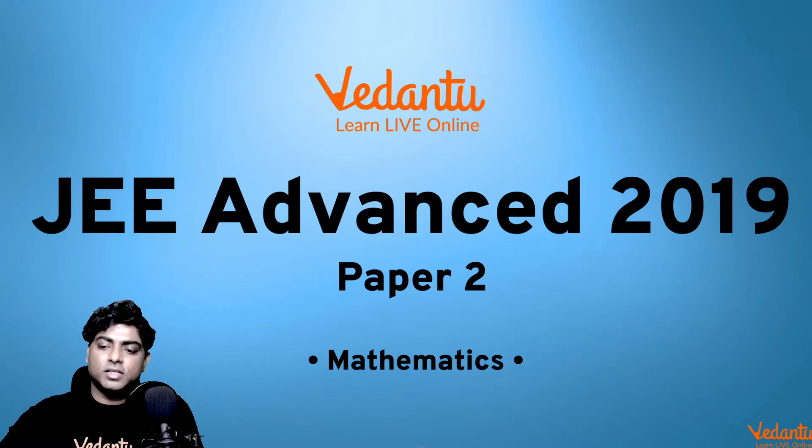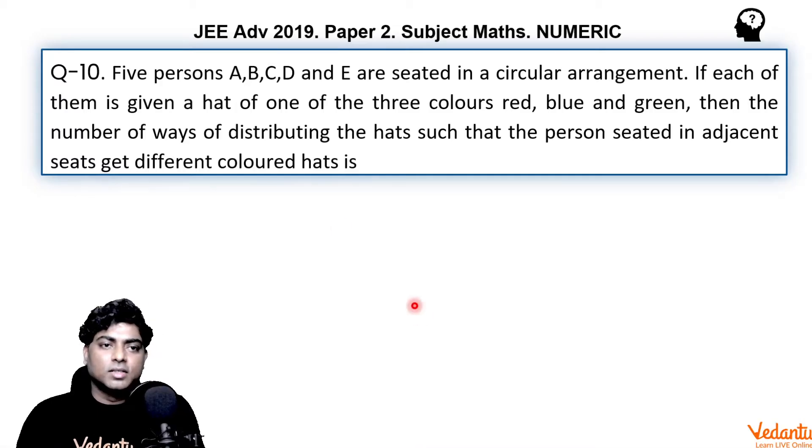Let's have a look at the problem. It says five persons A, B, C, D, E are seated in a circular arrangement. If each of them is given a hat of one of the three colors - red, blue, and green - then the number of ways of distributing the hats such that persons seated in adjacent seats get different colored hats.